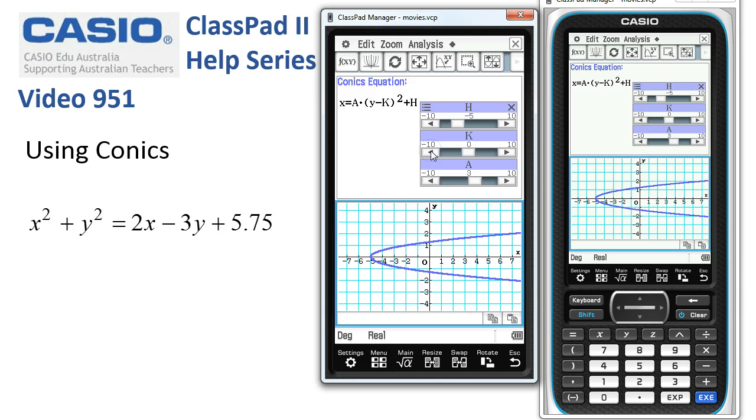k here, as we change that one, is moving the graph vertically. And if we change h by tapping on the slider, or we could drag the slider, you can see it's moving it in a horizontal direction. So you can explore these equations using the built-in sliders.